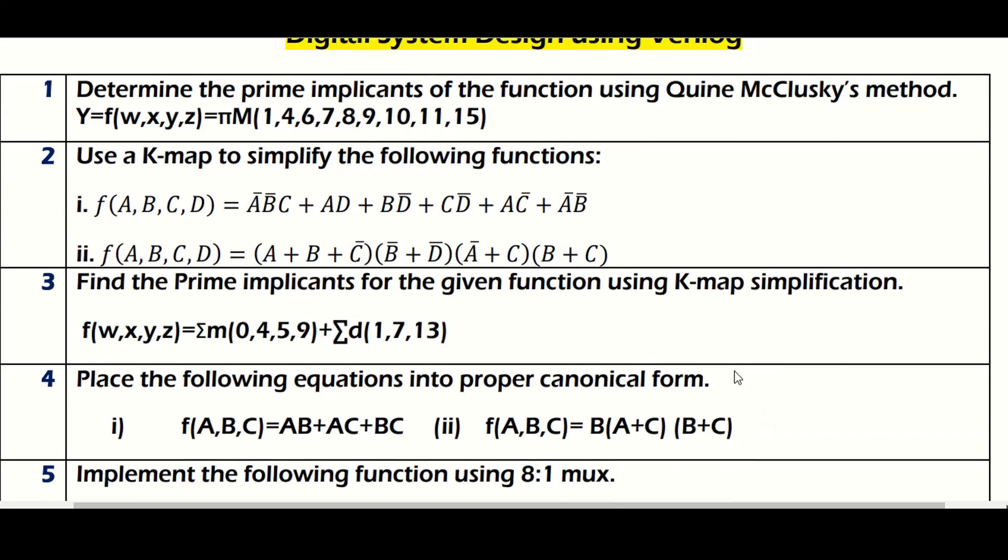In module one, Quine McClusky method, you may get a question like this. They are going to give some function, this is just an example, and you need to implement using Quine McClusky method. Similarly, the second question is on K-map simplification. They will give the function like this, a four variable function. You may get three variable, four variable, or five variable function. You need to simplify this using K-map.